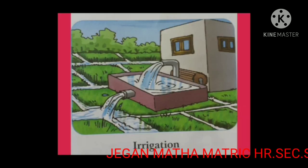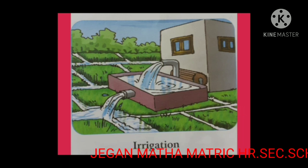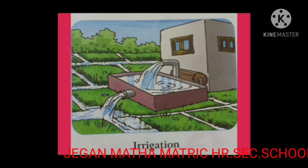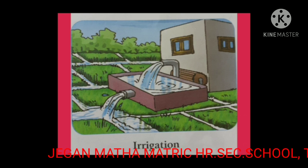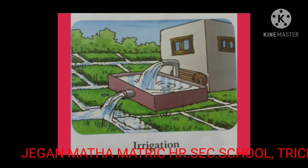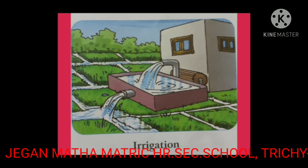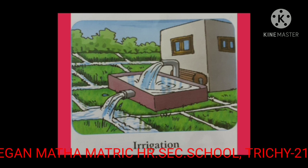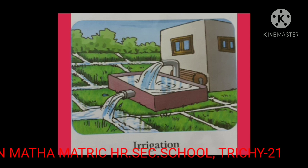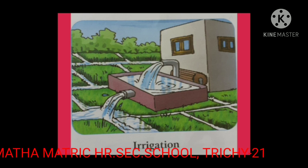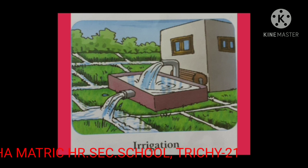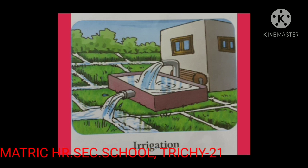Irrigation helps to grow agricultural crops, maintain landscapes, and re-vegetate disturbed soils in dry areas and during periods of less than average rainfall. Irrigation also has other uses in crop protection. The main sources for irrigation water are groundwater from wells, surface water, drainage ponds, rain, and municipal water.